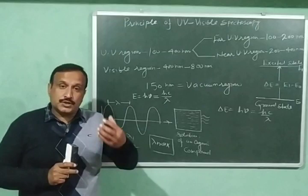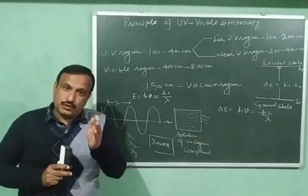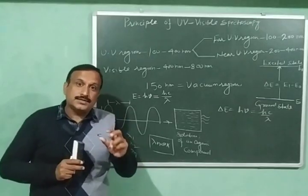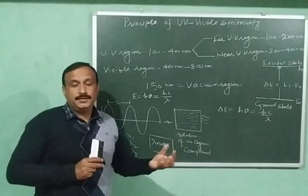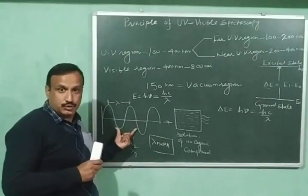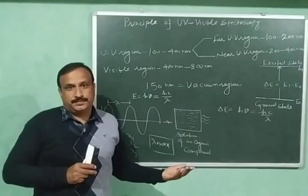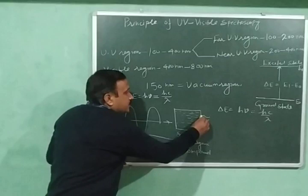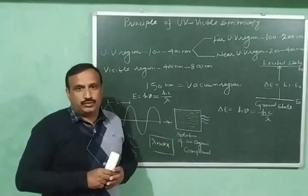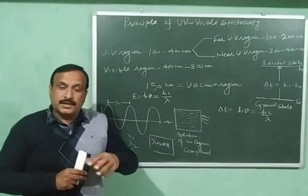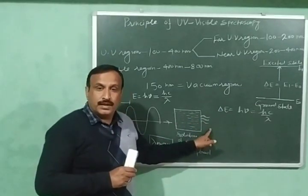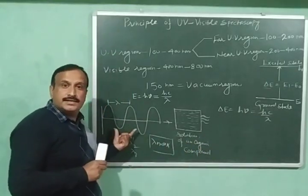Now, if the number of such collisions — where the energy of a photon equals the energy difference — is large, then a large number of photons will be absorbed by the organic compound, and we say that this wavelength has been absorbed to a greater extent. In this case the transmitted radiation will have less intensity. If the number of such collisions is less, then fewer photons are absorbed, the transmitted light will have more intensity, and we say that this wavelength has less absorbance.